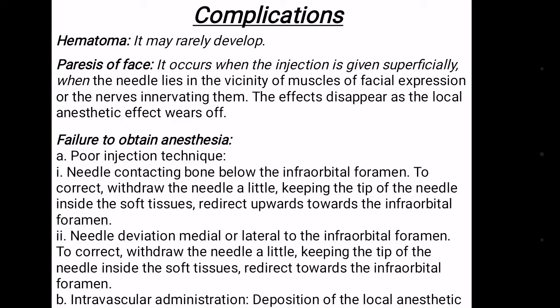Failure to obtain anesthesia may occur due to poor injection technique or intravascular administration. Under poor injection technique, the needle may contact bone below the infraorbital foramen; to correct this, withdraw the needle slightly, keeping the tip inside the soft tissue, and redirect upward towards the infraorbital foramen. Sometimes the needle deviates medially or laterally; correct by withdrawing slightly and redirecting towards the infraorbital foramen.